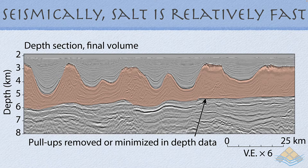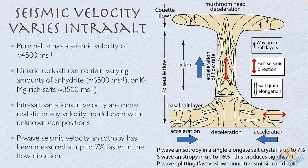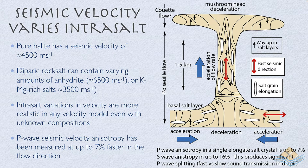Correcting for pull-up requires reasonable knowledge of the velocity profile in salt, which can be problematic. When salt flows, it exhibits a range of internal velocities because it undergoes stress and strain as it passes into the diapyric neck, and then becomes de-stressed and recrystallizes in the overlying succession. Salt has two sources of anisotropy in a diapyric structure: it contains boudinaged and broken anhydrite or bittern salt beds deforming within the flowing mass, and it also undergoes recrystallization as it flows.